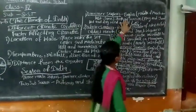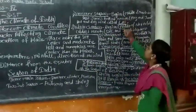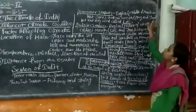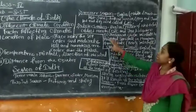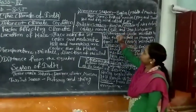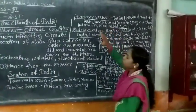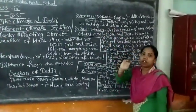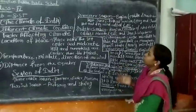Summer season. We have to start from the middle of March to the last of June. That means up to June. In this season, it is extremely hot.